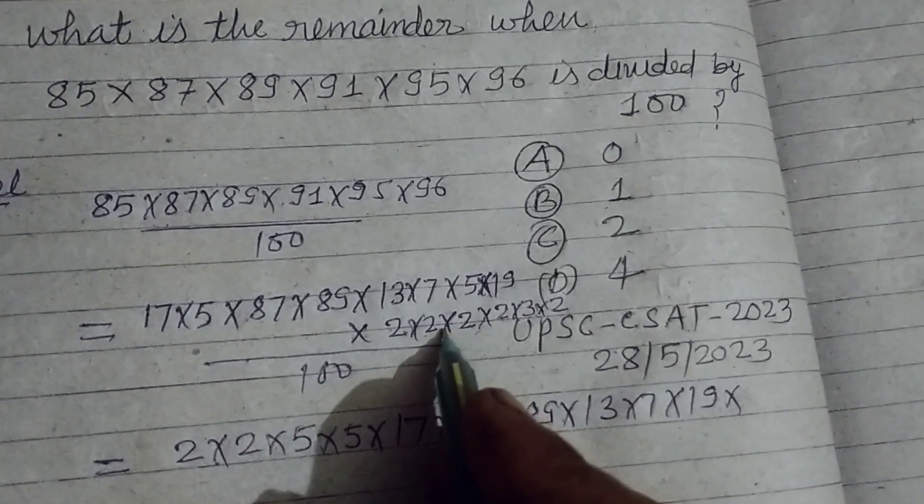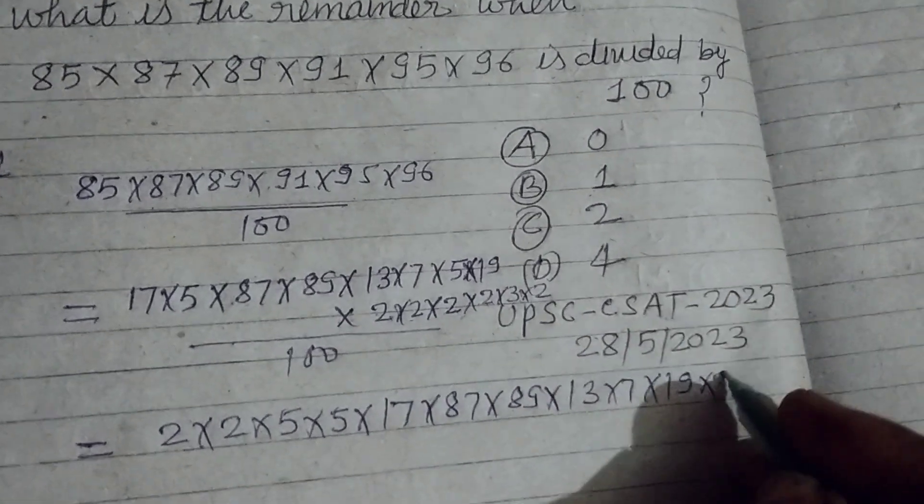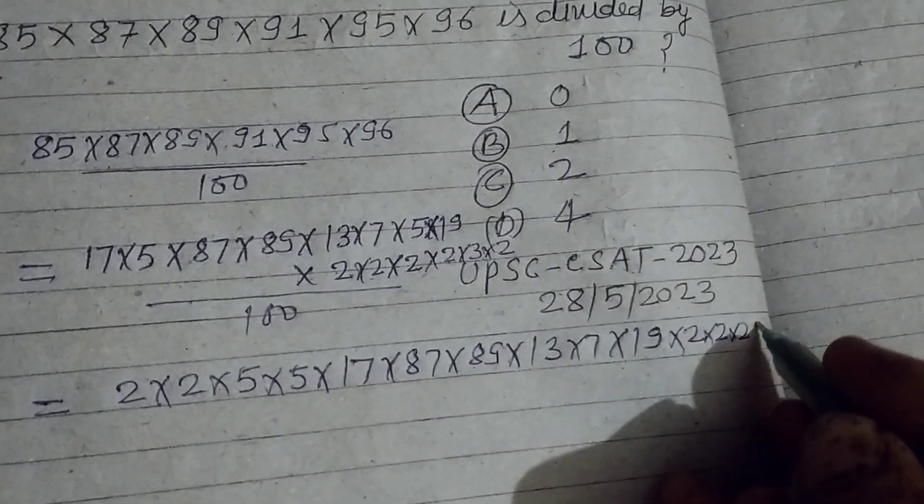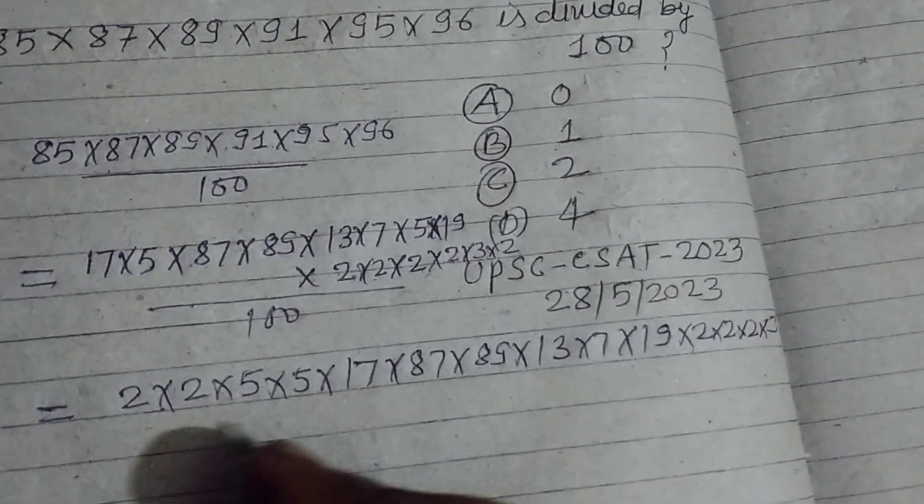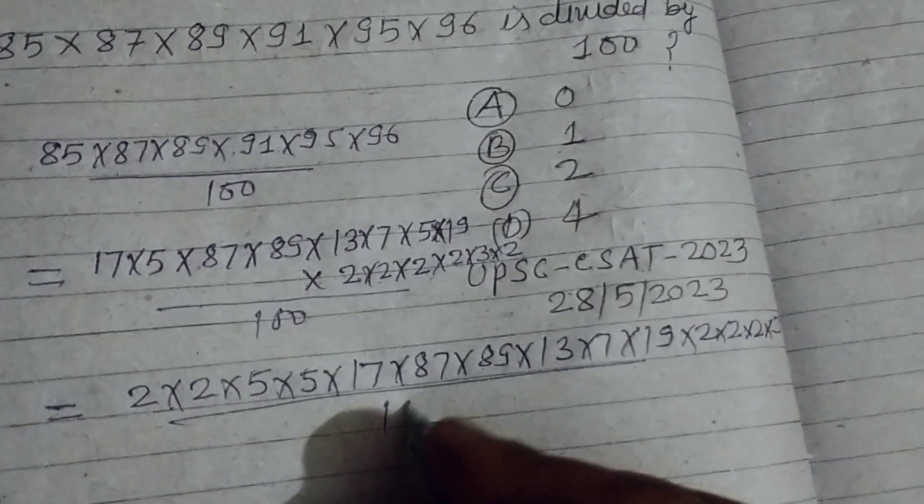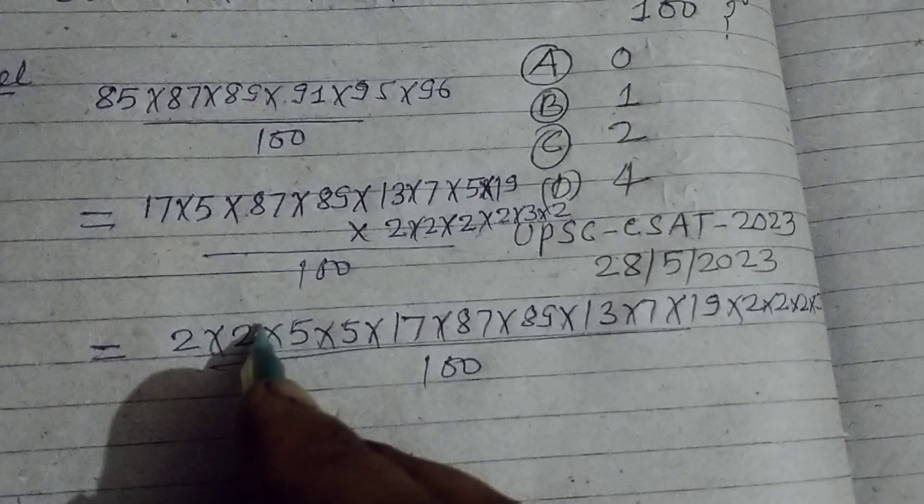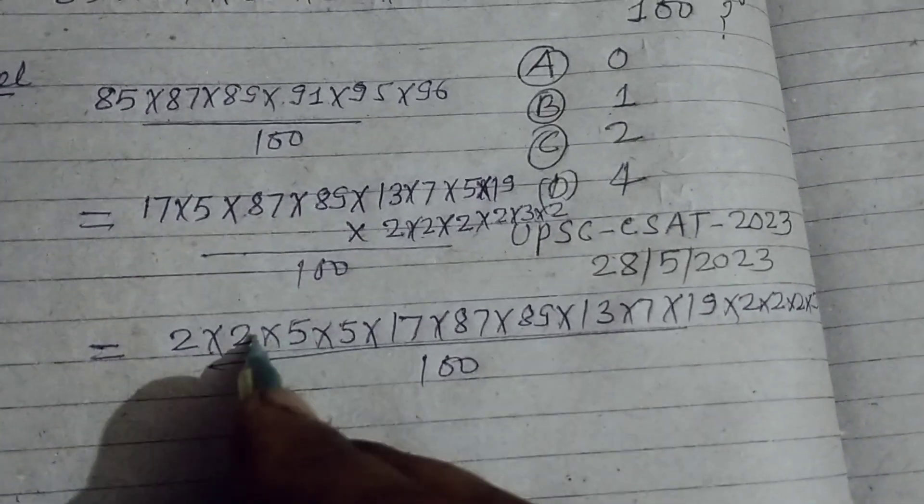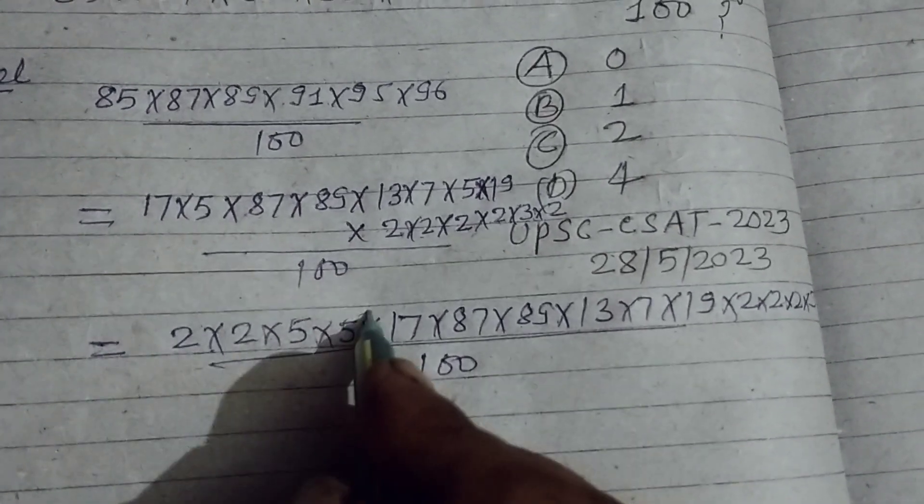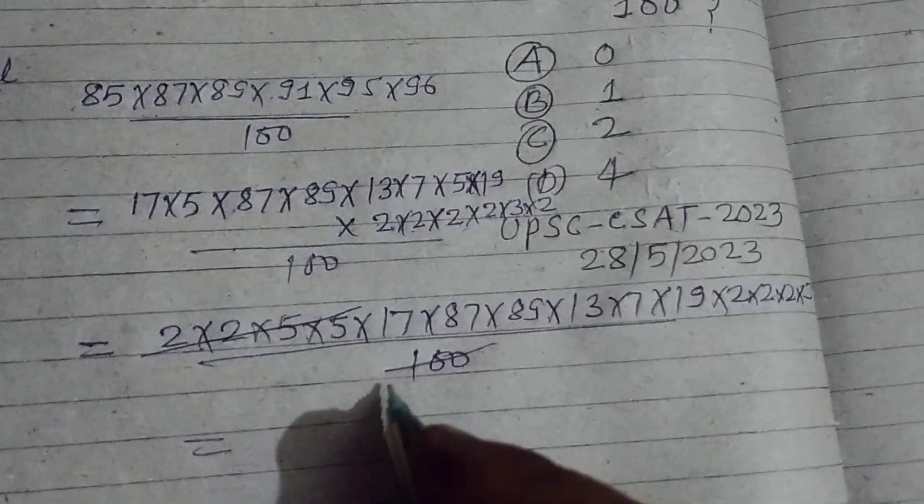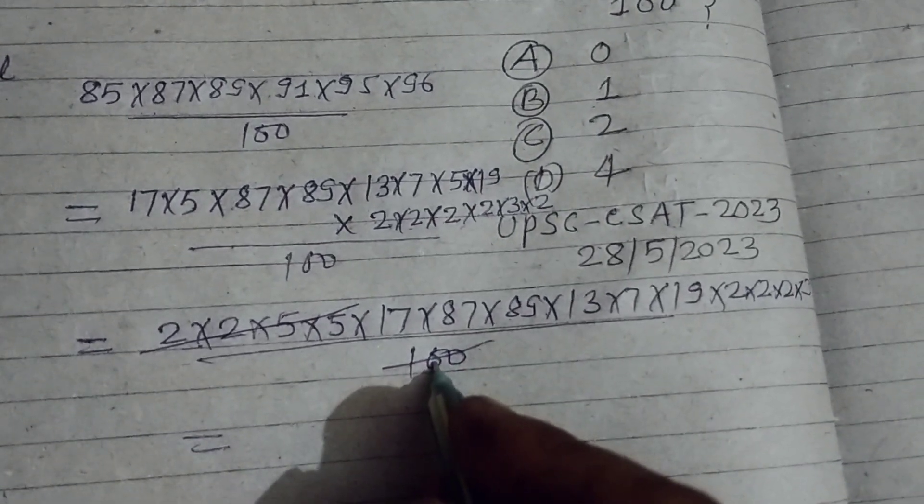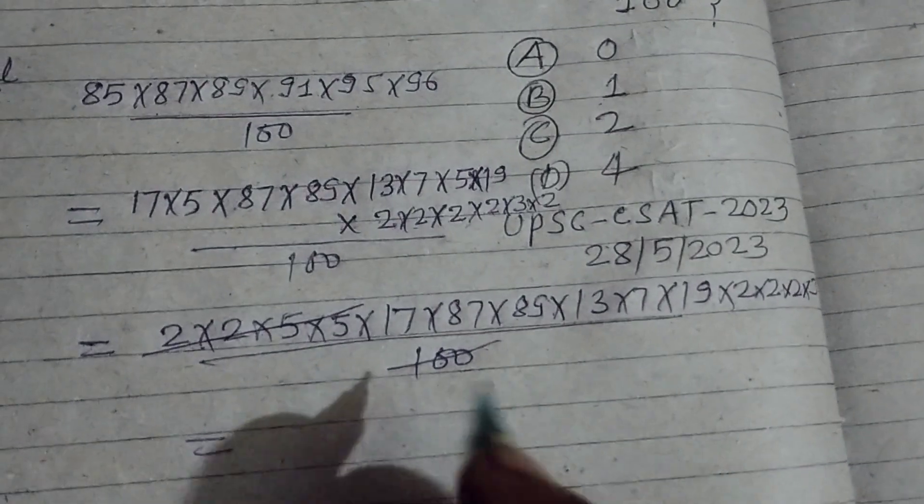Now we have 100 in the denominator. So 5×10, 5×10 is 10×10, which equals 100. So it is divisible, and the denominator is totally removed.